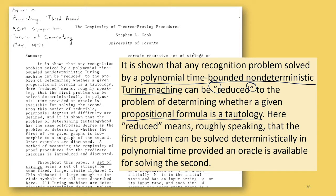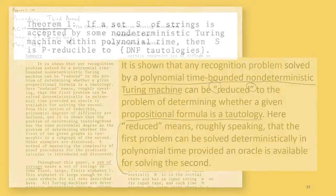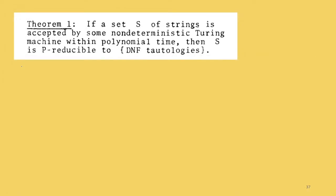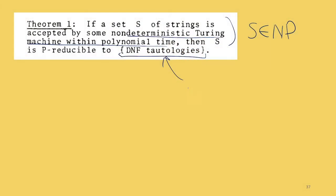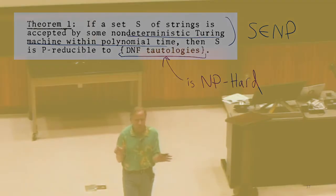Reduced means we can solve one problem using the other one. That's the first two sentences of the paper. The theorem says: if there's a set of strings accepted by some non-deterministic Turing machine within polynomial time — basically saying S is in NP — then we can reduce S to this problem. In our current terminology, this is saying the tautology problem is NP-hard.